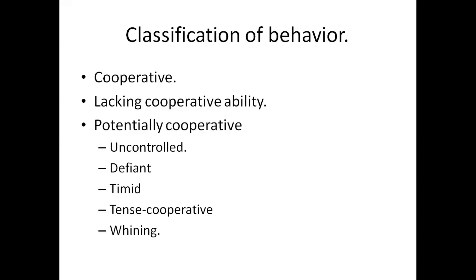Lacking cooperative abilities: these are children who are deficient in comprehension or communication skills or even both. Examples are very young children, especially less than three-year-olds, and children with certain disabilities. Then potentially cooperative children — these are children who are capable of appropriate behaviors but are disrupted in the dental environment. The types of potentially uncooperative patients can be classified as uncontrolled, which begins at three to six years of age and is characterized by tantrums.